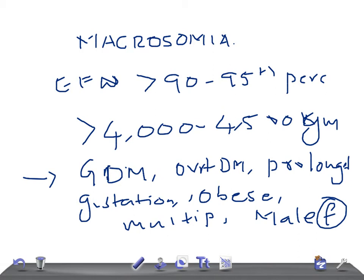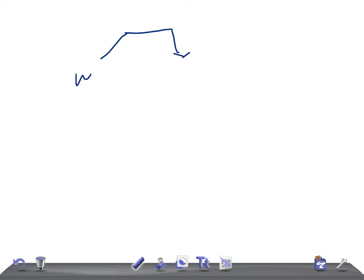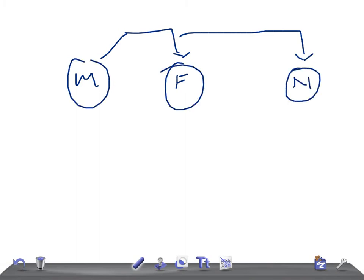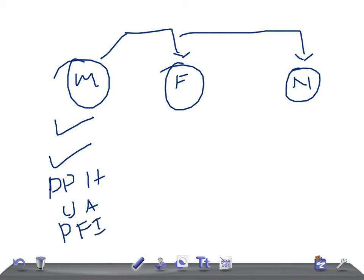Let's talk about the hazards. We'll cover three areas: maternal hazards, fetal hazards, and neonatal hazards. Maternal hazards include operative vaginal delivery because the baby is very big and there will be problems during labor, requiring emergency cesarean section. There are also perineal lacerations, postpartum hemorrhage due to uterine atony, and pelvic floor injury.